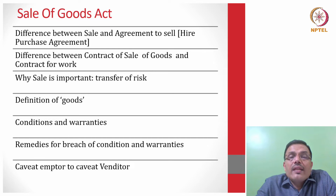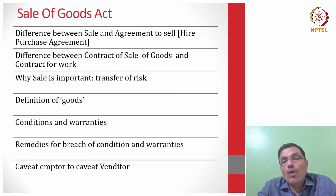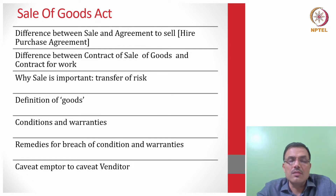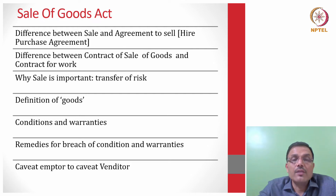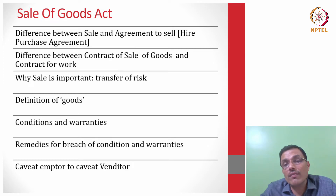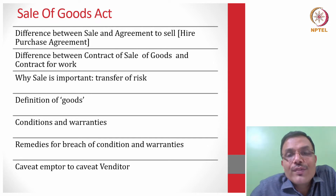Similarly, another interesting right under the Sale of Goods Act is called the suit for the price — suing for the price of the goods. Sellers can go to the court and sue for the price. We must make the distinction that a suit for the price is different from a suit for damages. In damages, you have to suffer some kind of loss, and the proof of damage is the quantification of damages.